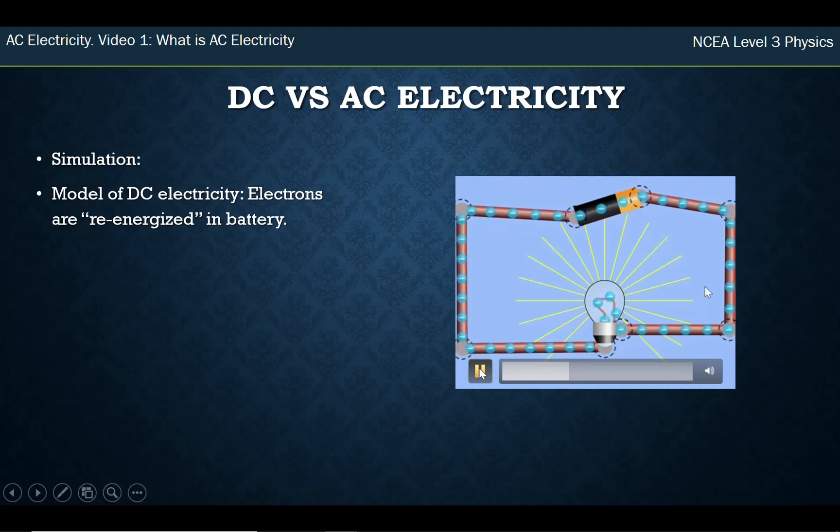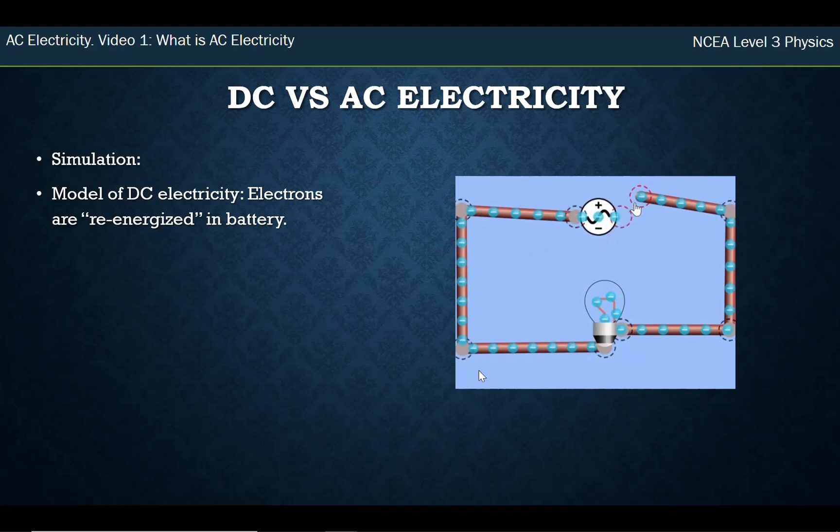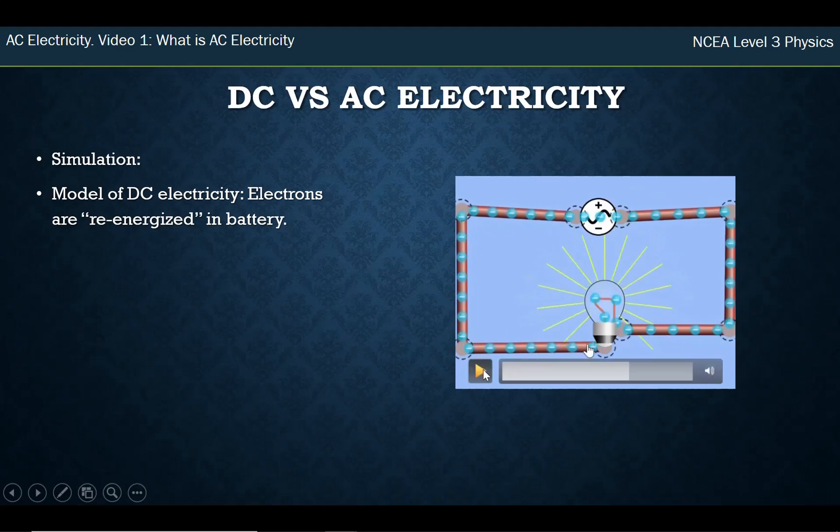When I take out my battery here and replace it with an AC source you're going to see something interesting happen. So AC means that the current is alternating. Alternating means back and forth and I want you to carefully watch that the electrons no longer flow through the battery, collect the energy and go all the way through to the bulb. They just go back and forth and back and forth and look at the ones in the bulb, they don't go very far and yet the bulb still lights up.